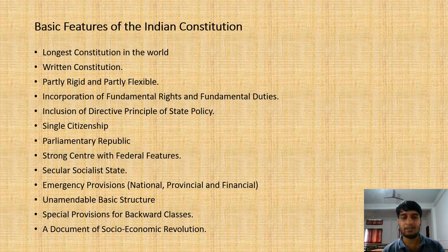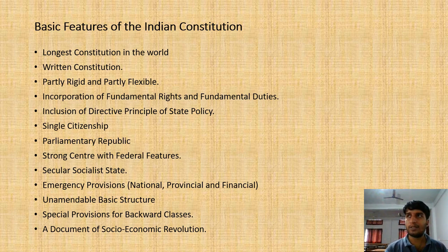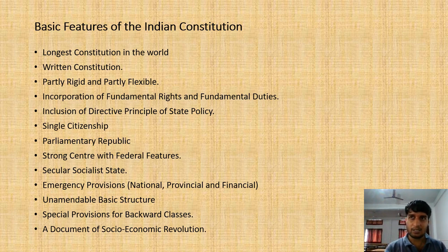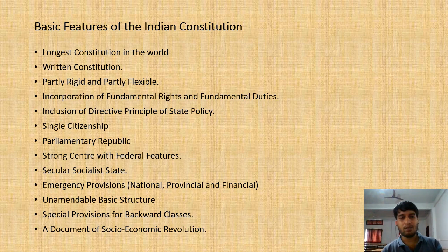We have a strong centre with federal features — our central government is quite strong when it comes to various provisions, as seen for example during the COVID-19 pandemic where most guidelines were issued by the centre. We also have a secular and socialist state — though these words were not initially part of the original Constitution but were included by the 42nd Amendment of 1976 by Indira Gandhi. We have emergency provisions: National Emergency under Article 352 and President's Rule under Article 356.